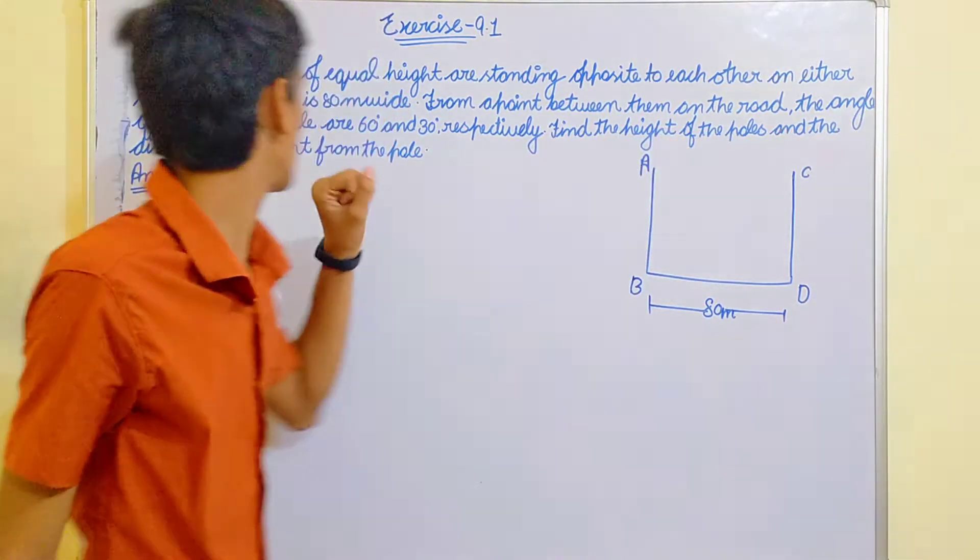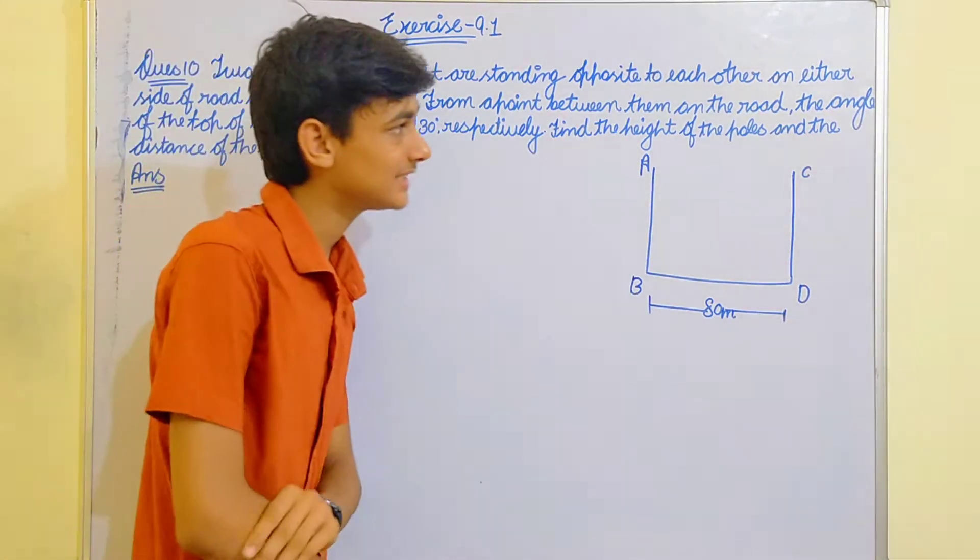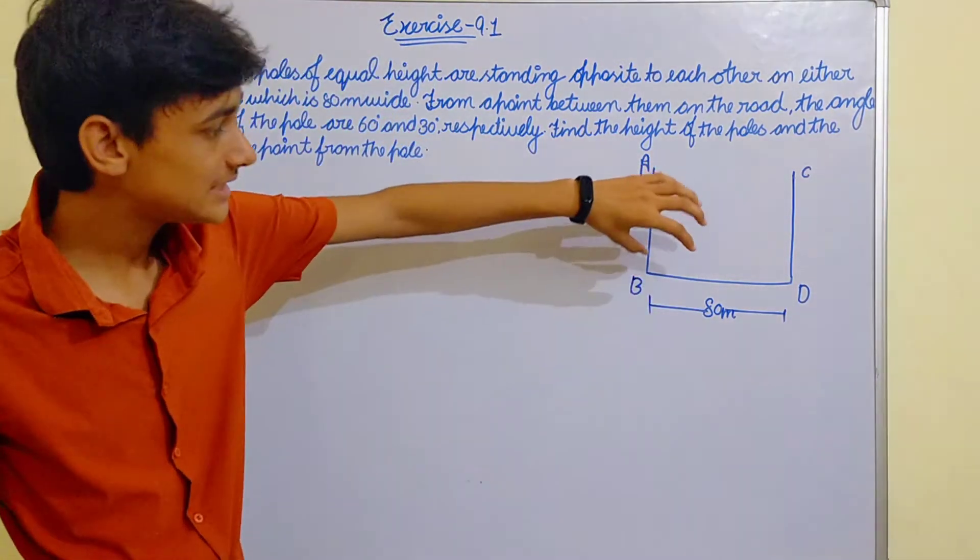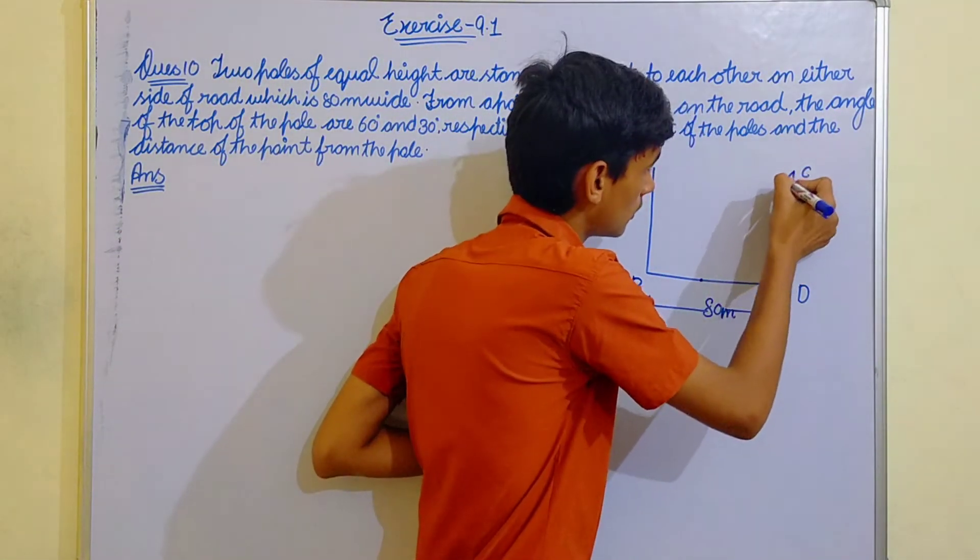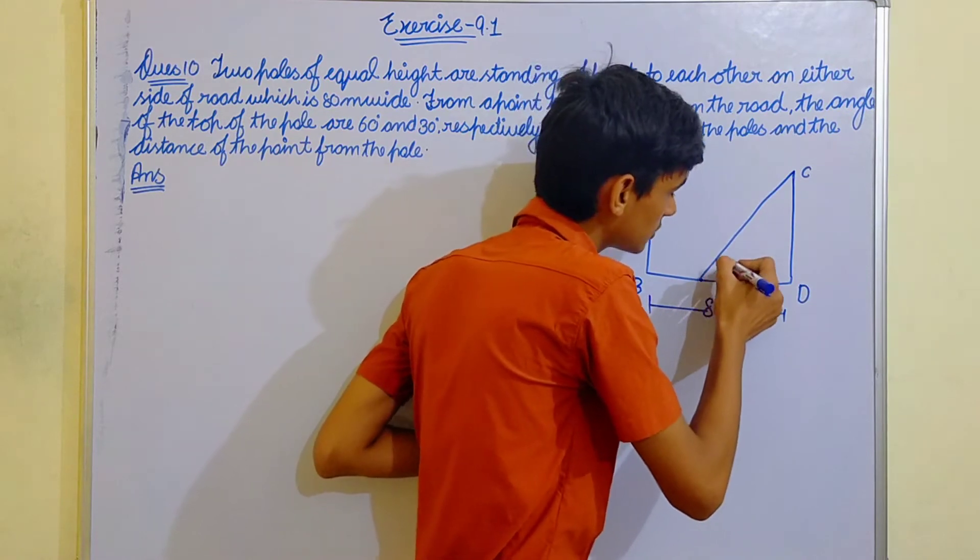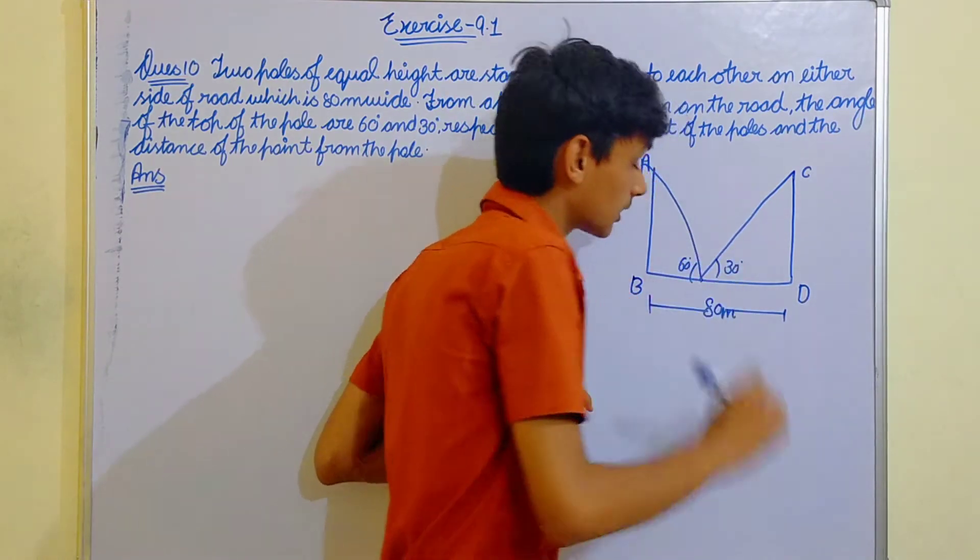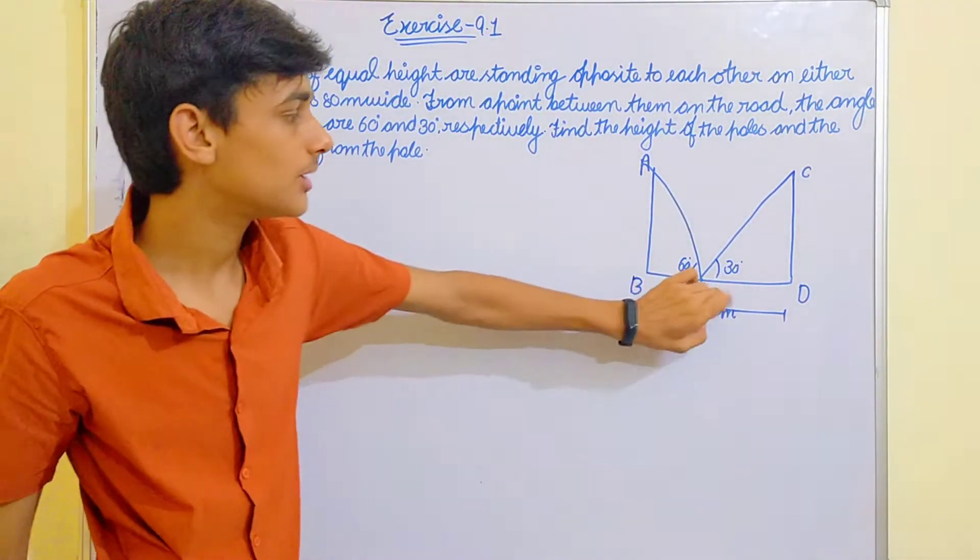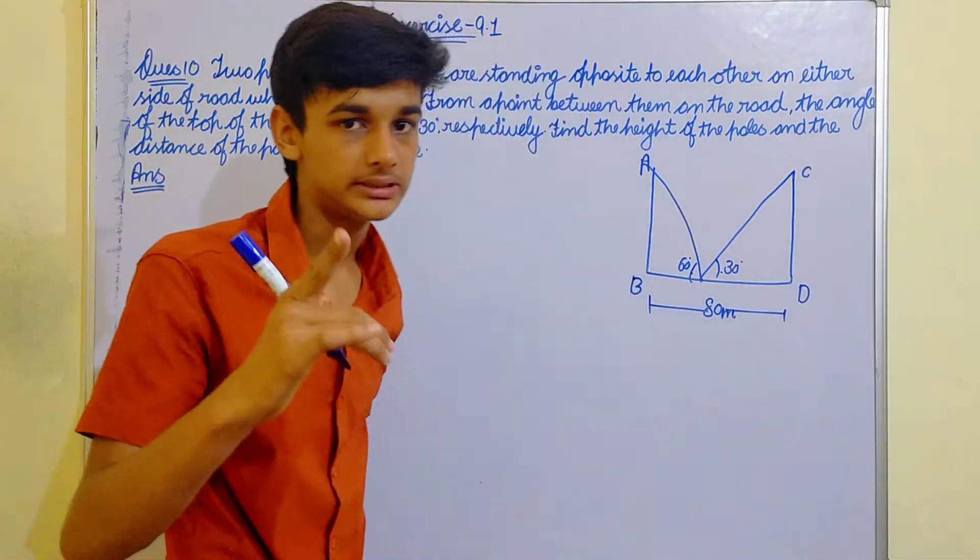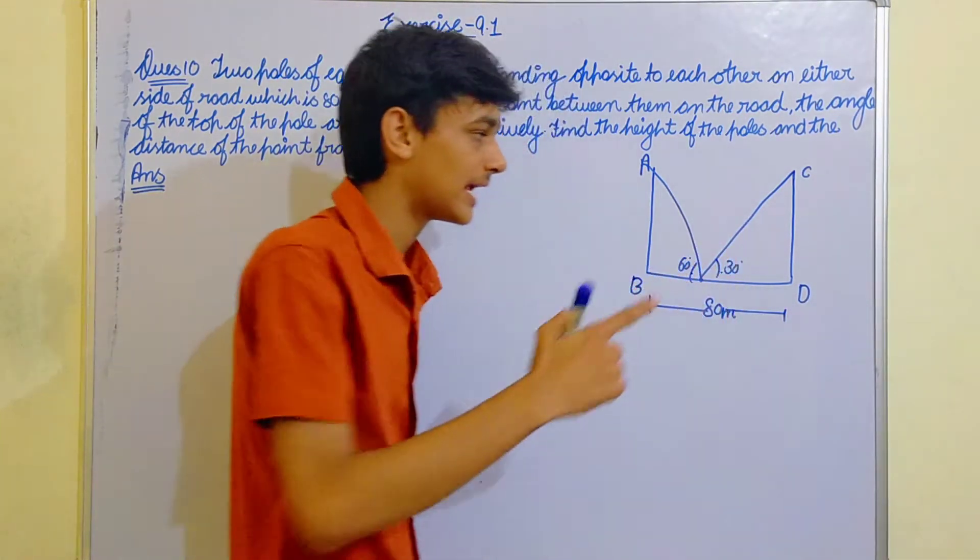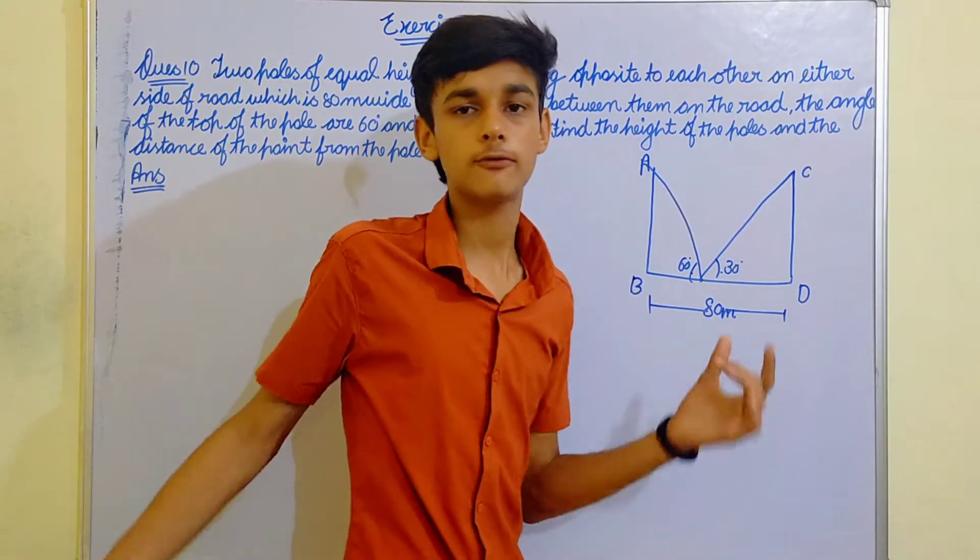From a point between the road, the angle to the top of the pole is 60 and 30 degrees respectively. Find the height of the pole and the distance of the point from the pole. Suppose it is a point here, angle of elevation to the top is 30 degrees and 60 degrees. Now we will think that this point is not in the middle of the road.